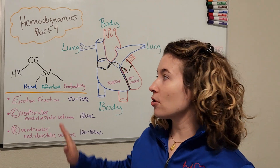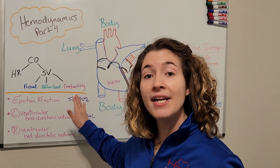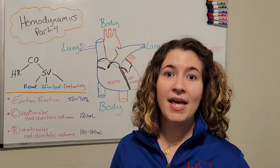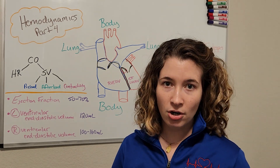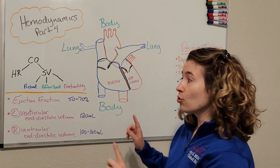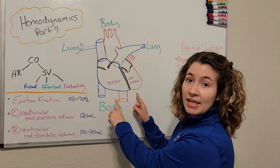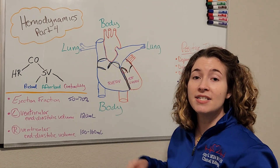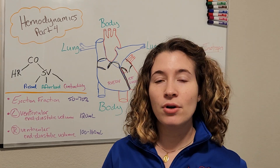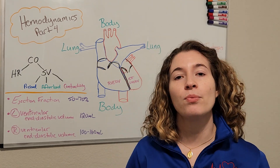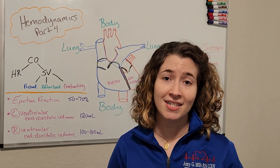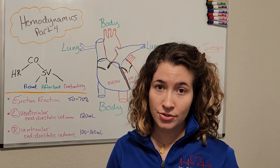Now remember, contractility is the final variable that's going to determine stroke volume and ultimately cardiac output. Contractility is the ventricle's ability to pump out blood to either the lungs or the body. Now there are a couple of different parameters that we can use to assess the contractility status of the ventricles.